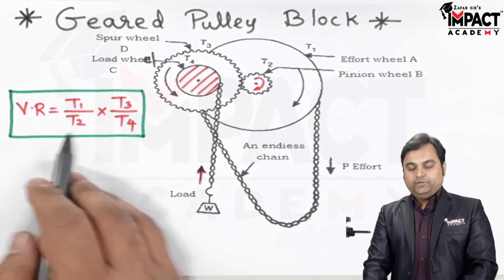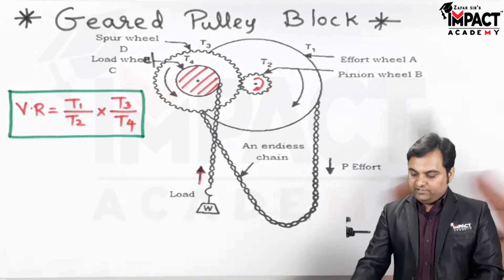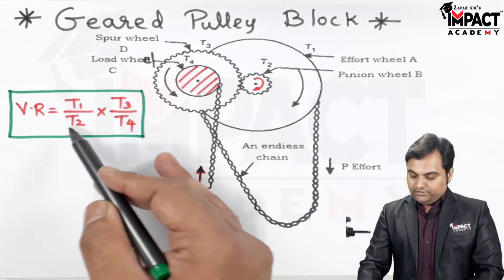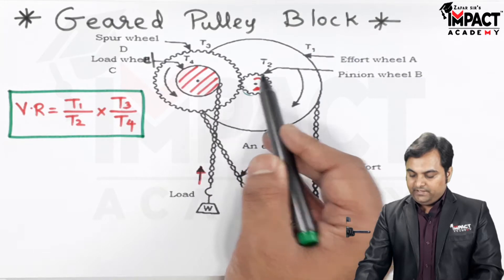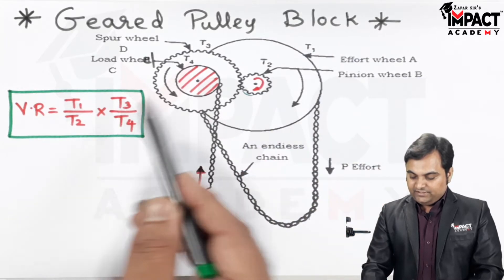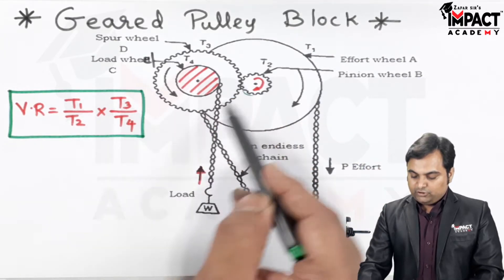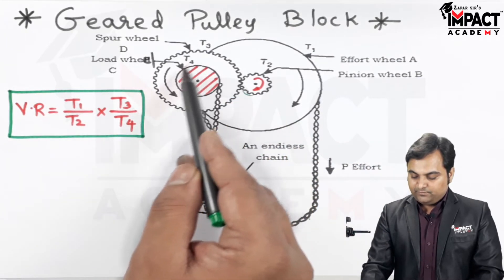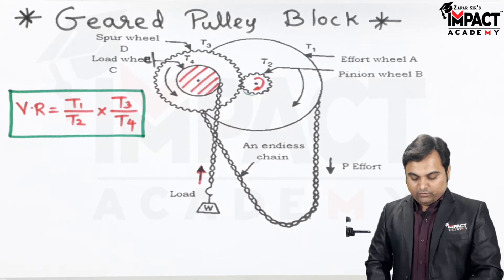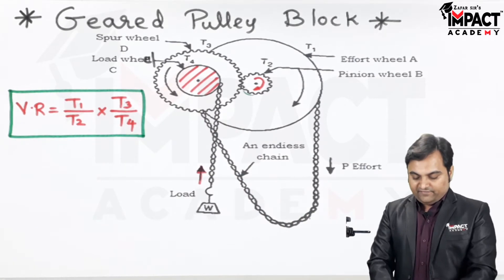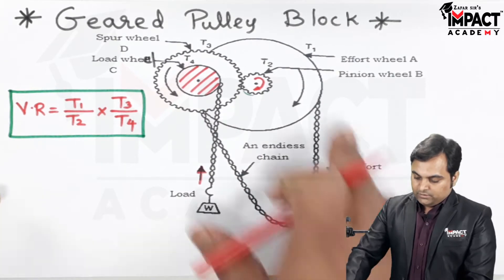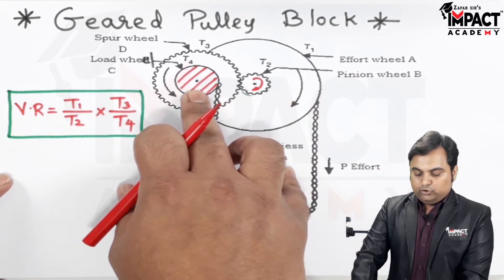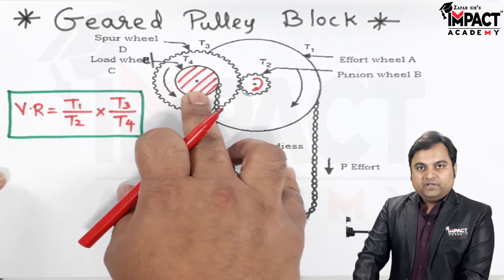The velocity ratio formula is: T1 divided by T2, multiplied by T3 divided by T4. Here T1 is the number of teeth on the effort wheel, T2 is the number of teeth on pinion B, T3 is the number of teeth on spur wheel D, and T4 is the number of teeth on the load wheel.